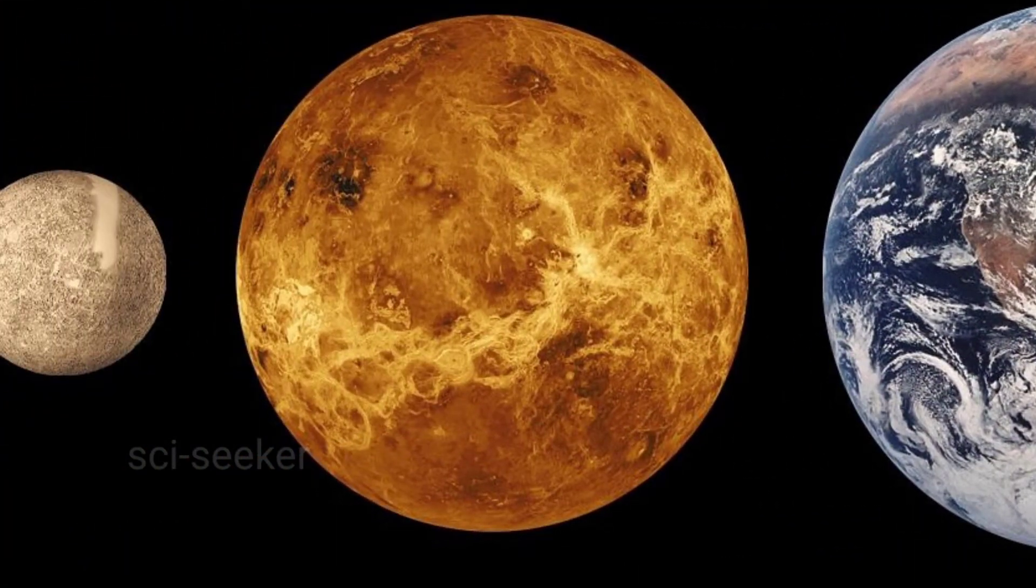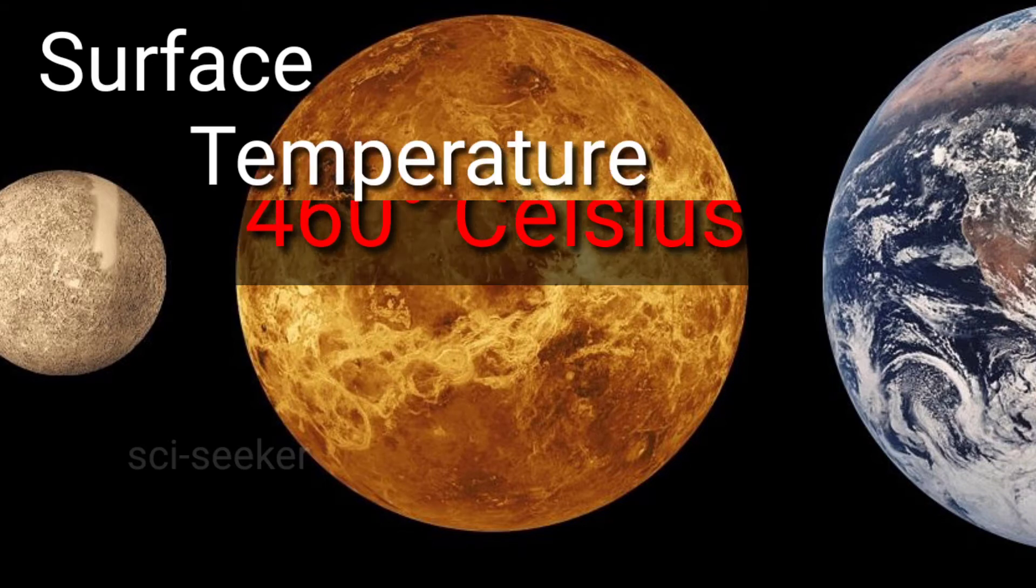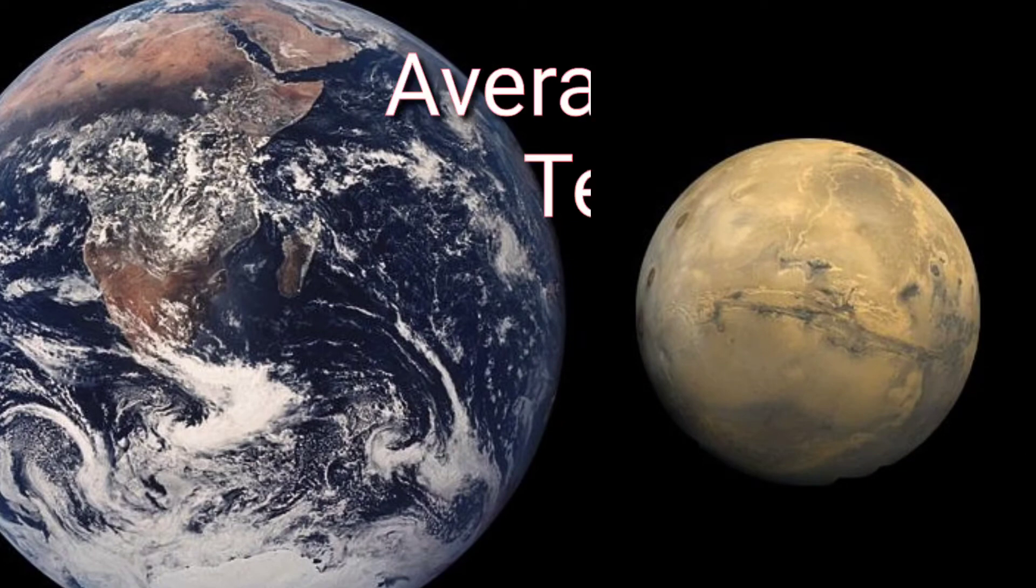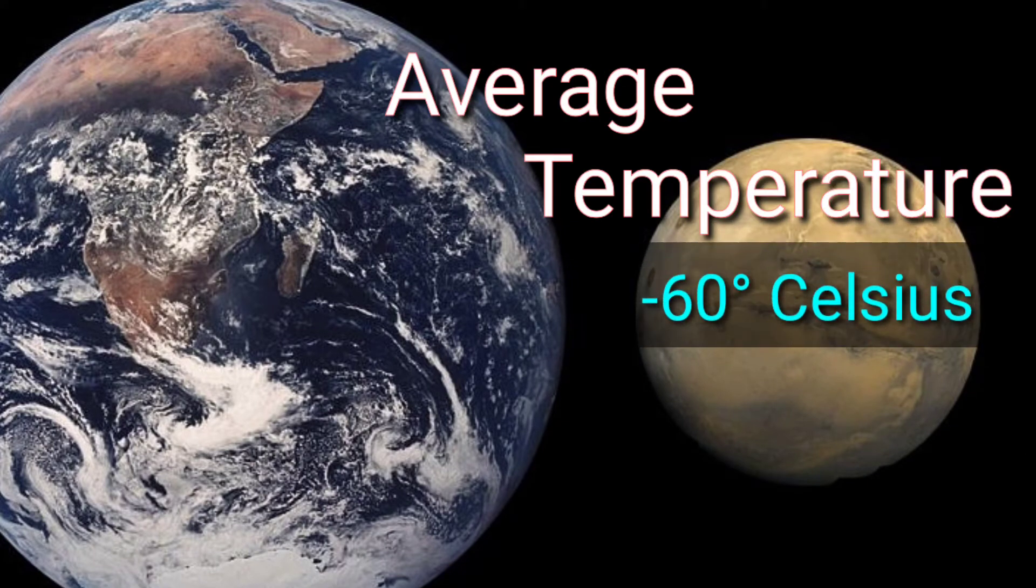Venus is too hot, with surface temperature over 460 degrees Celsius, and Mars is too cold, with an average temperature of minus 60 degrees Celsius.